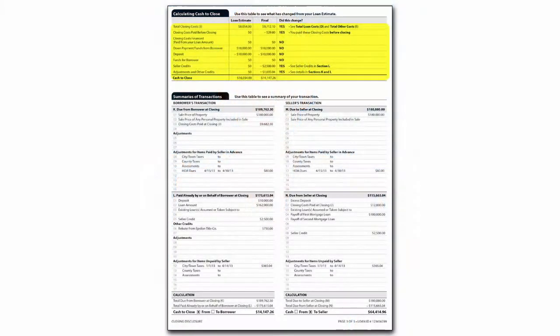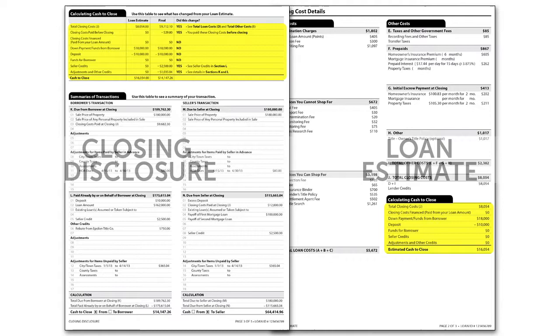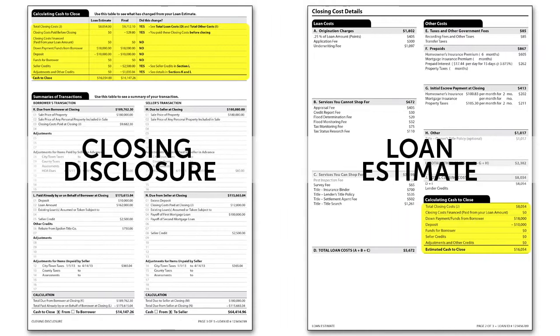Page 3 of the CD displays a calculating cash-to-close table at the top. This is similar to an estimated cash-to-close table the borrower first saw soon after loan application on their loan estimate form. The cash-to-close table on the CD provides a comparison to the estimated numbers provided on the LE for an at-a-glance comparison for the borrower.